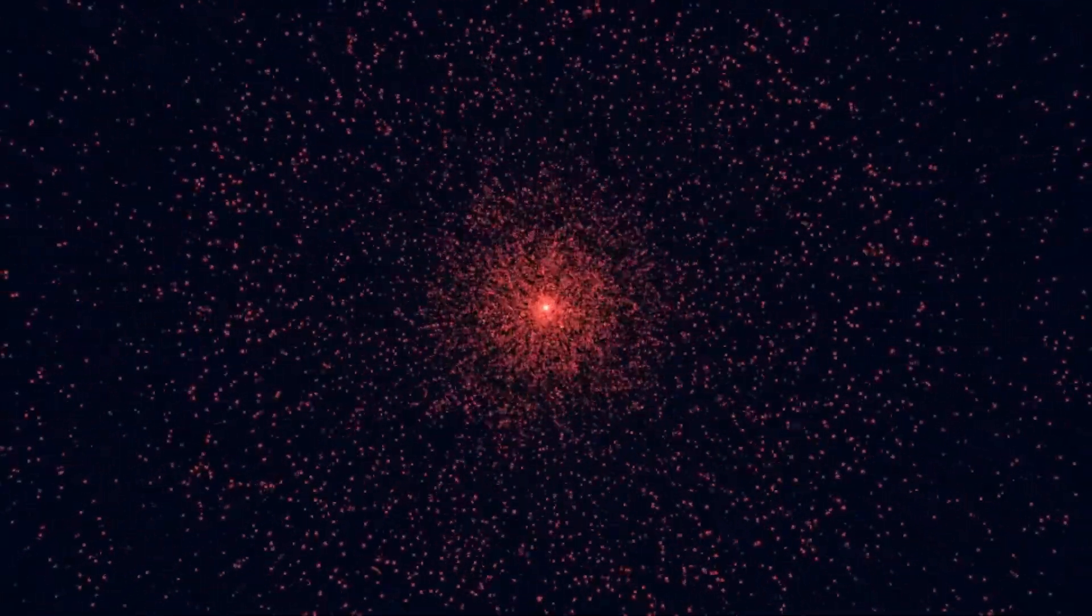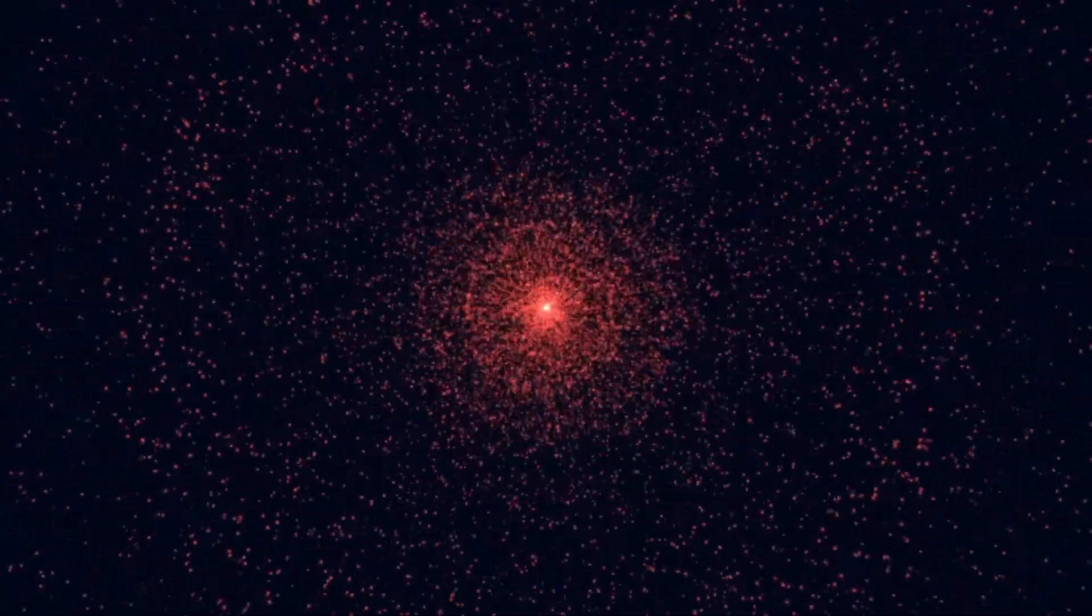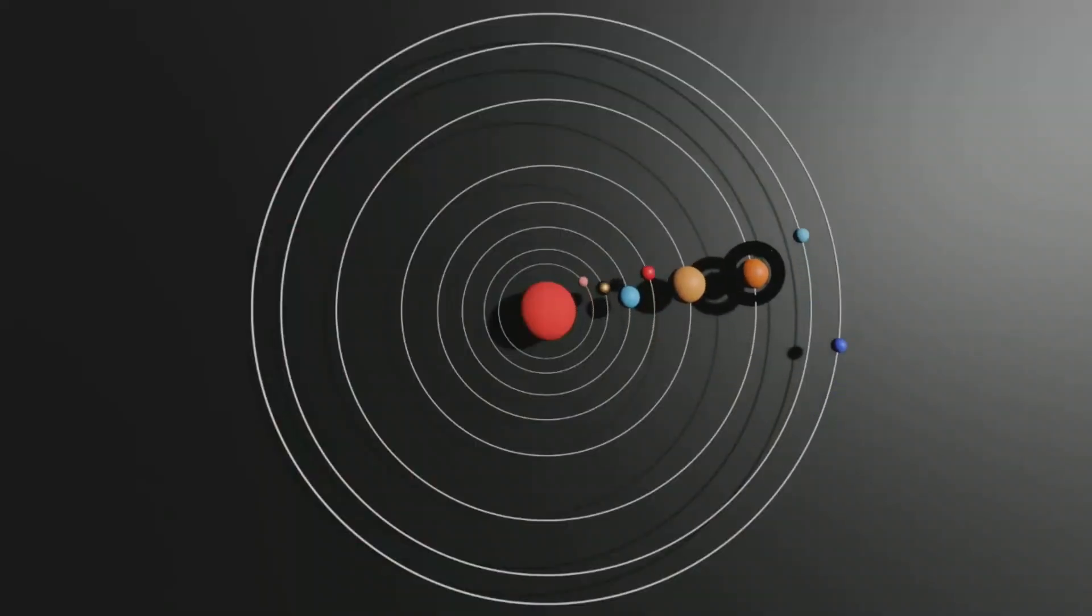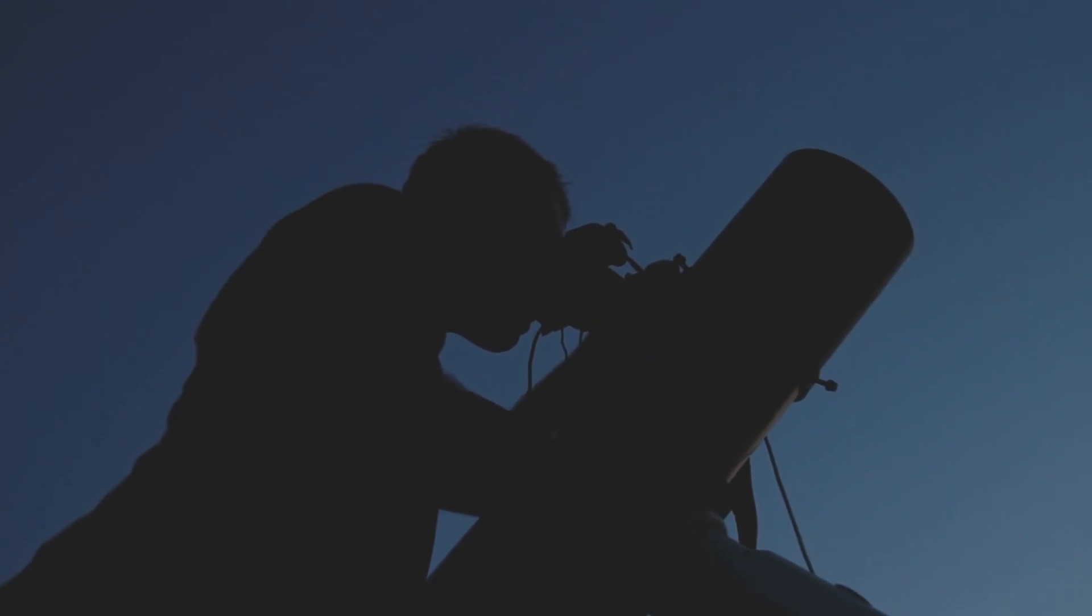NASA's James Webb Space Telescope, known for its unparalleled sensitivity and ability to peer deeper into the cosmos than any of its predecessors, has made a highly relevant discovery regarding an exoplanet designated K2-18b. This remarkable world, which boasts a mass 8.6 times that of Earth, has captured the scientific community's attention due to what was found within its atmosphere.